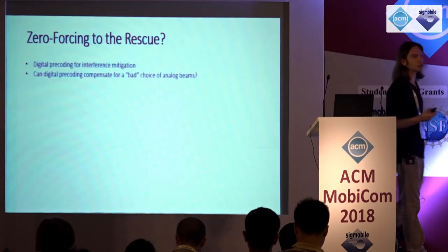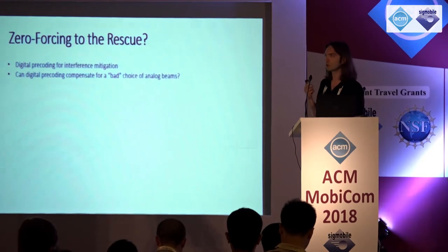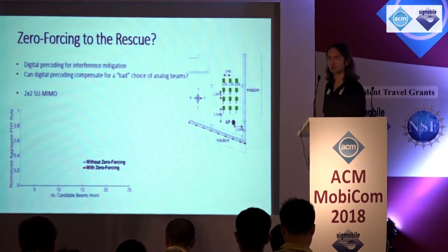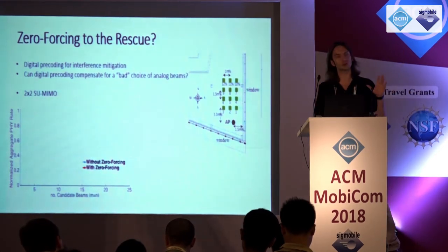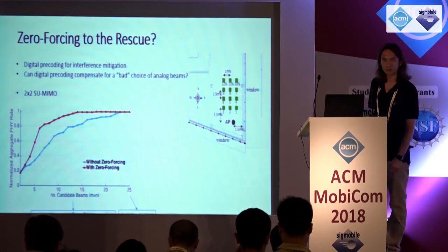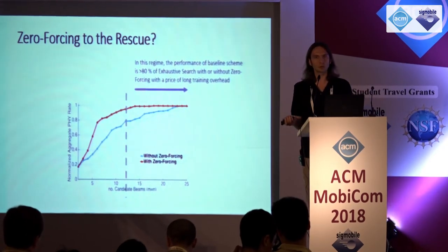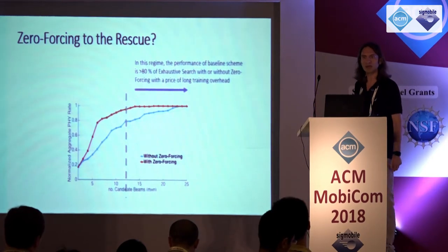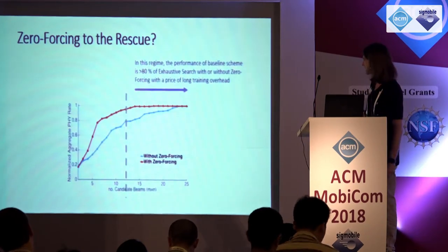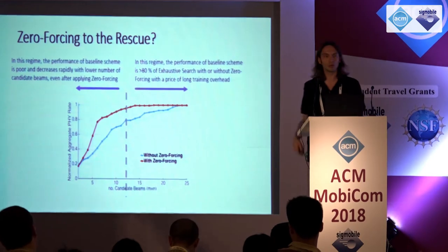Could zero-forcing help here? Zero-forcing digital pre-coding is a known technique in the sub-6 GHz band to deal with inter-stream interference. The question is whether it can compensate for a poor selection of analog beams. In a single-user MIMO example, with the x-axis as the number of candidate beams, we see two regions: with a large candidate set, SNR-based selection with zero-forcing gives good results near 80% or more of max, but requires very high search overhead. In the practical small-candidate-set region, zero-forcing boosts performance, but both schemes eventually degrade as the number of tested beams decreases.